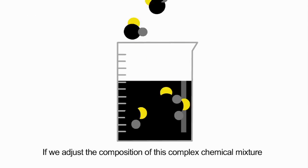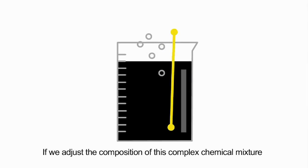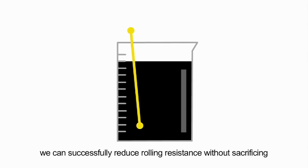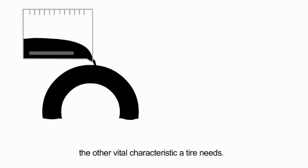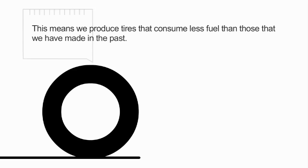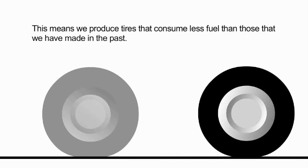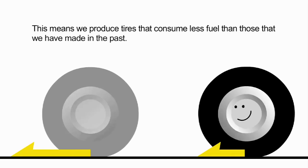If we adjust the composition of this complex chemical mixture, we can successfully reduce rolling resistance without sacrificing the other vital characteristics a tire needs. This means we produce tires that consume less fuel than those that we have made in the past.